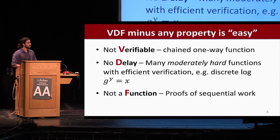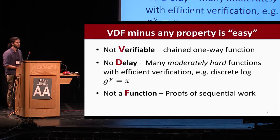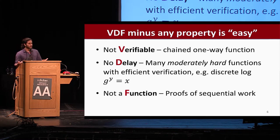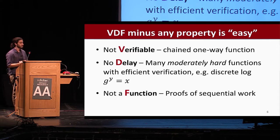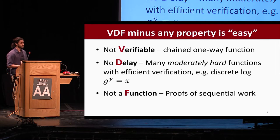To summarize: a VDF minus any one of its properties is either easy or follows from previously known constructions. If it's not verifiable, chaining any one-way function gives you a sequential function. If there's no delay required and only moderate hardness to compute with efficient verification, there are many examples — for instance, discrete log on a small domain. And if it's not a function, then proofs of sequential work suffice.